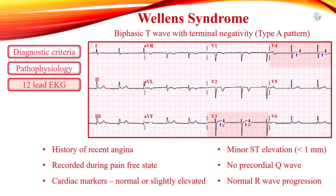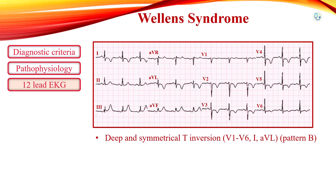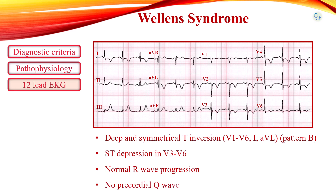Wellens syndrome is considered a STEMI equivalent, and the definitive treatment is cardiac catheterization with PCI. This EKG demonstrates Wellens syndrome type B pattern. There are deep and symmetrical T-wave inversions throughout the anterolateral leads, from V1 to V6, and also in leads I and aVL. The ST-segment is depressed, R-wave progression is normal, and there is no precordial Q-wave.